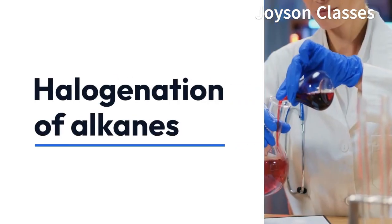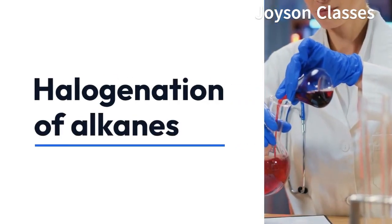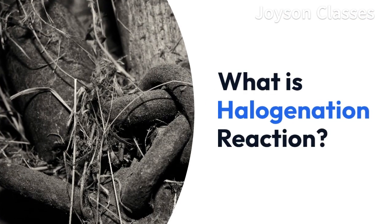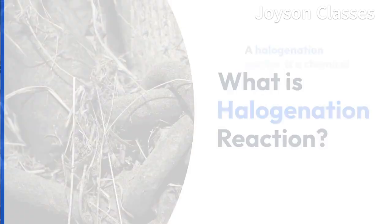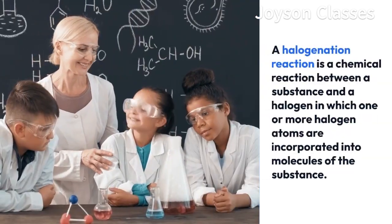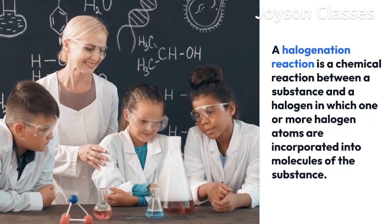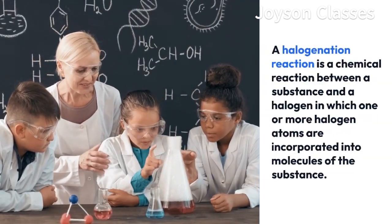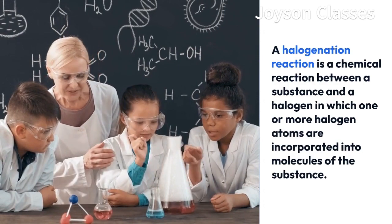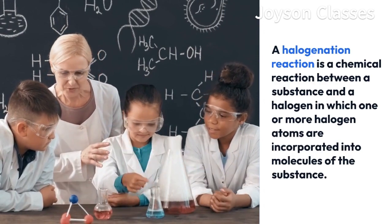Halogenation of alkanes. A halogenation reaction is a chemical reaction between a substance and a halogen in which one or more halogen atoms are incorporated into molecules of the substance.